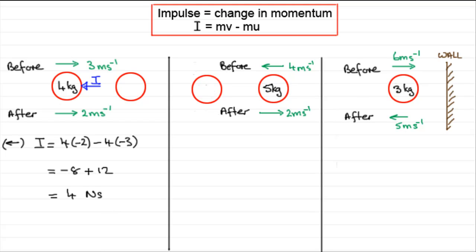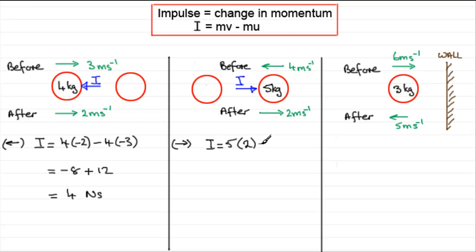For Question 2, the impulse that the 5kg mass receives is to the right. Taking the positive sense to the right, I equals mass 5 times the final velocity: speed is 2 in the positive direction, so velocity is 2. Minus mass 5 times the initial velocity: speed is 4 metres per second in the opposite sense, so velocity is minus 4. So: 5 times 2 is 10, minus 5 times minus 4 is plus 20, giving a total of 30 newton seconds.